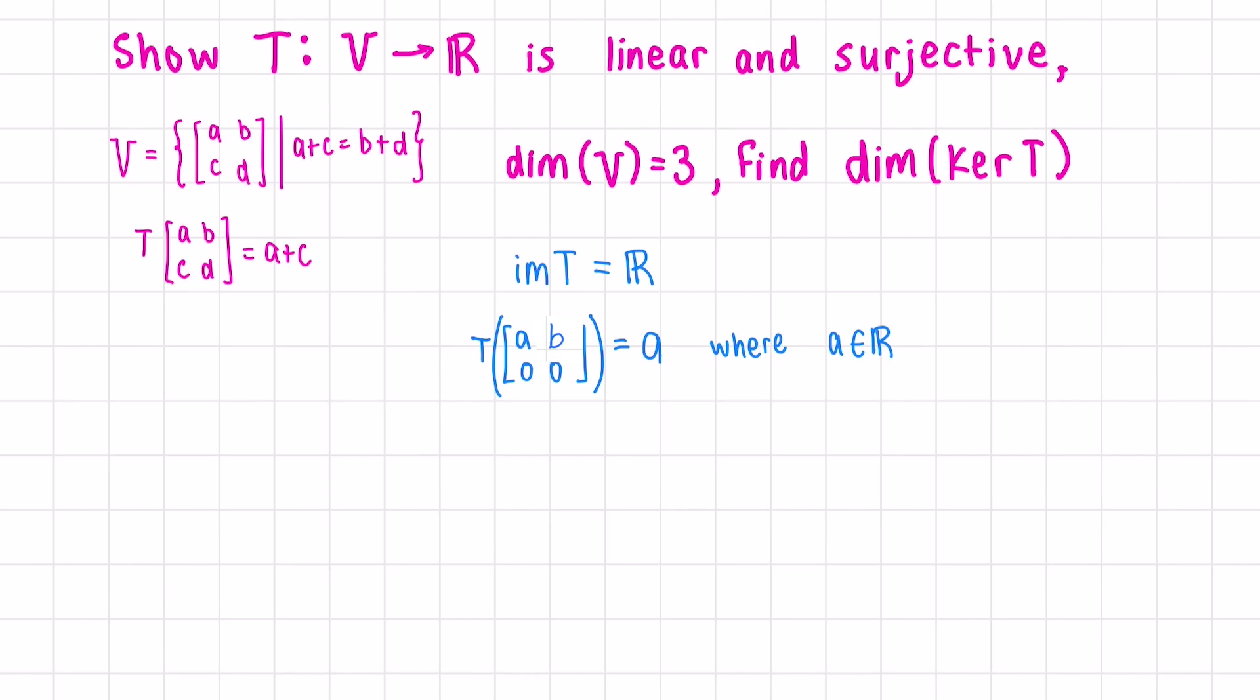Lastly, we're asked to find the dimension of the kernel of the transformation. We've just found the dimension of the image of the transformation is one-dimensional, and we're told that the dimension of this vector space V is 3. According to the dimension theorem, the dimension of our domain equals the dimension of the image of the transformation plus the dimension of the kernel of the transformation. The dimension of the kernel is 3 minus 1, or 2.